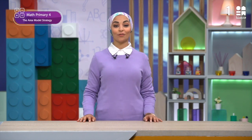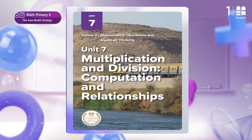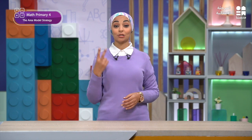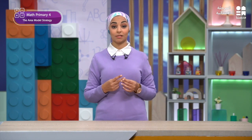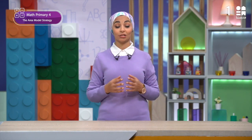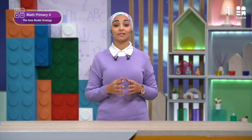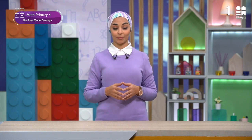Hello, my dear students. This is Missara. The title of Unit 7 is Multiplication and Division: Computation and Relationships. This unit has two concepts. Concept one is multiplying by one-digit and two-digit factors. We will learn about new strategies and the distributive property of multiplication.